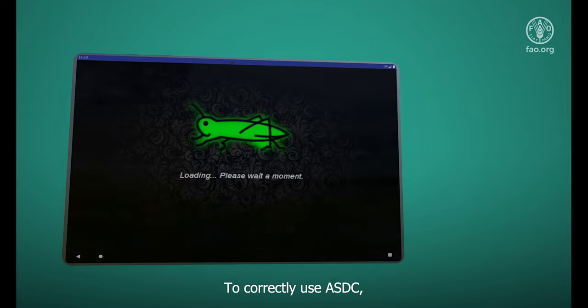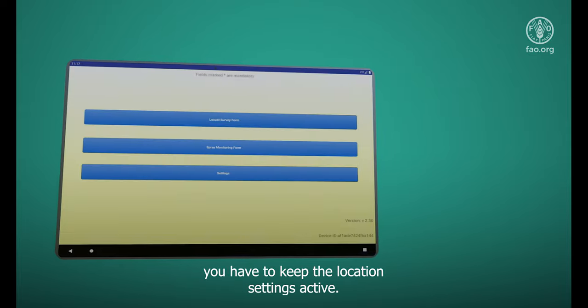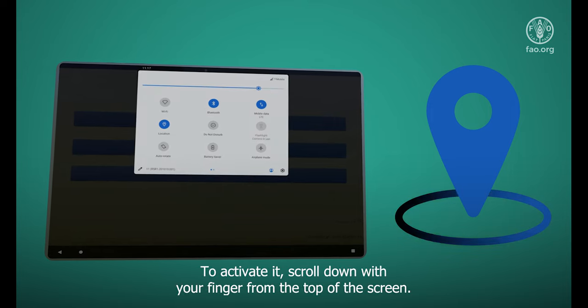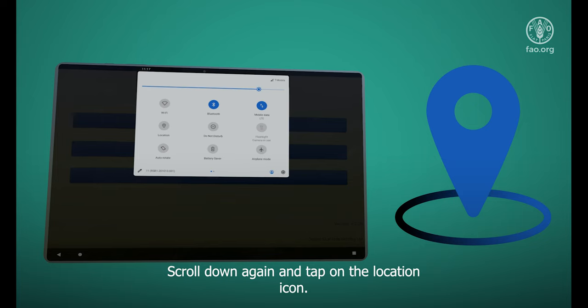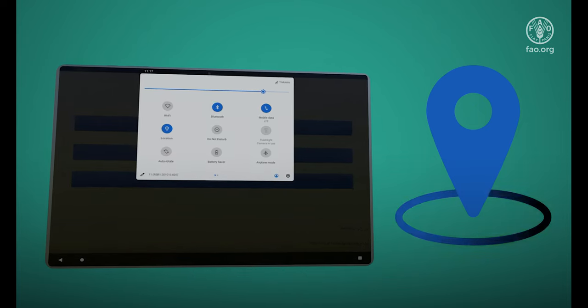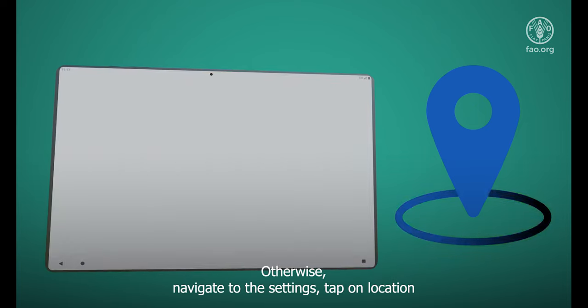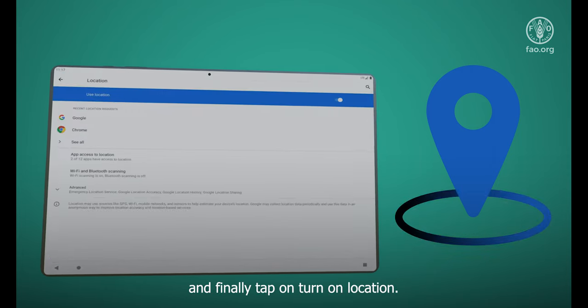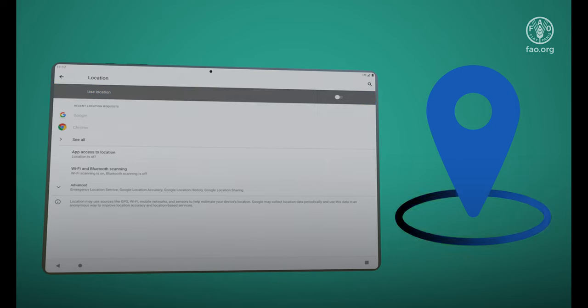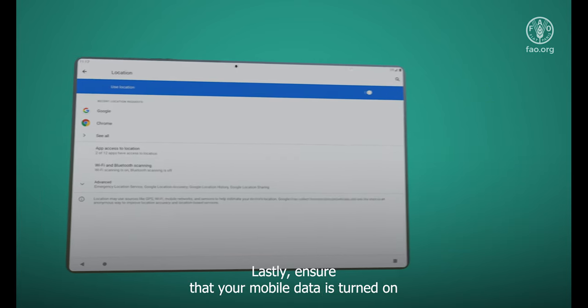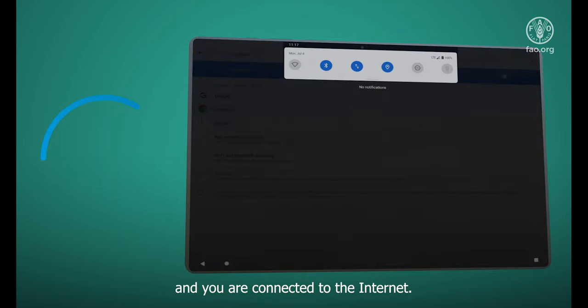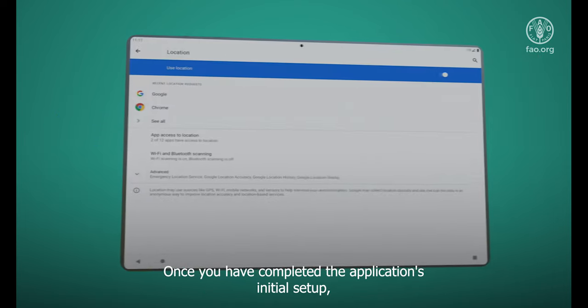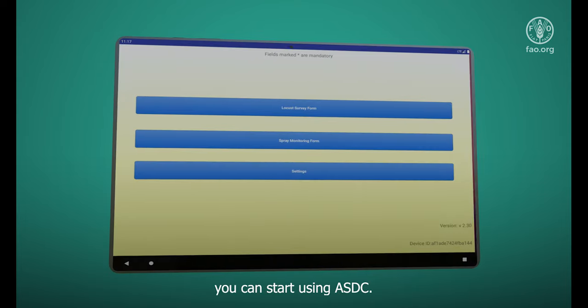To correctly use ASDC, you will have to keep the location settings active. To activate it, scroll down with your finger from the top of the screen, scroll down again and tap on the location icon. Otherwise, navigate to the settings, tap on location and finally tap on turn on location. Lastly, ensure that your mobile data is turned on and you are connected to the internet. Once you have completed the application's initial setup, you can start using ASDC.